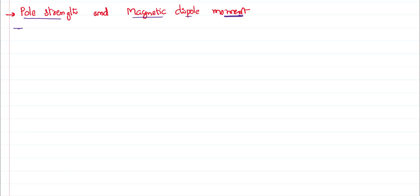Every magnet will always have a certain part close to the tip of the magnet where the ability of attracting other magnetic materials like iron or nickel is much more than the other parts. Those parts are called poles. When a magnet is freely suspended onto the surface of the earth it always shows north and south direction — that's called the directional property.